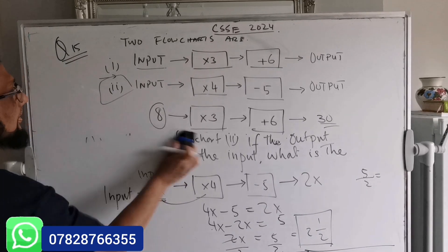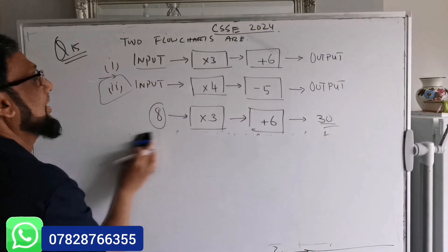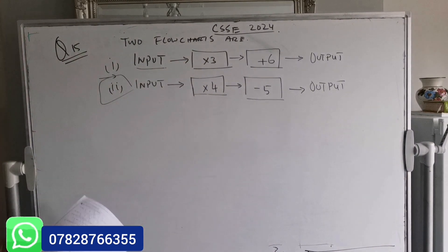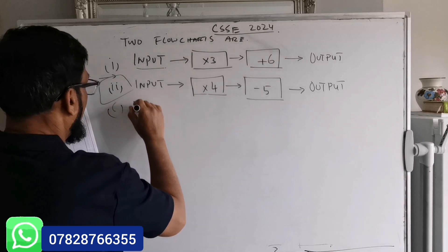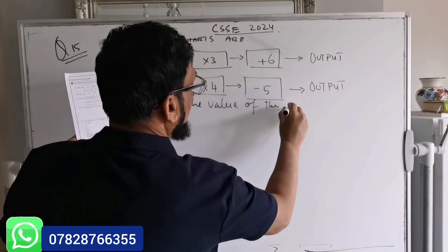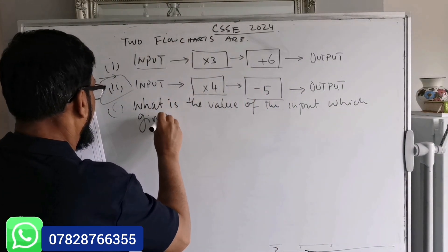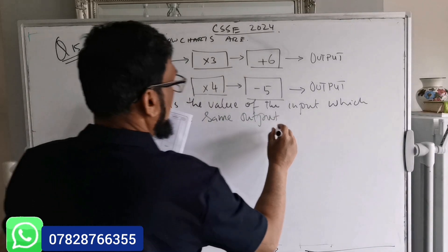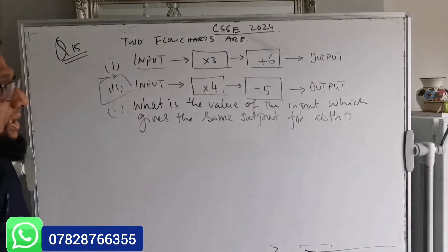Now back to Part C. I'll erase the previous working to make more space. Part C asks: what is the value of the input which gives the same output for both flow charts? So we need the output of flow chart one to equal the output of flow chart two.